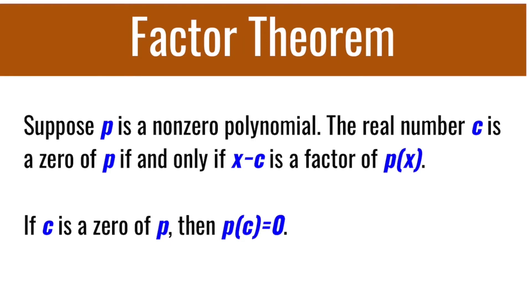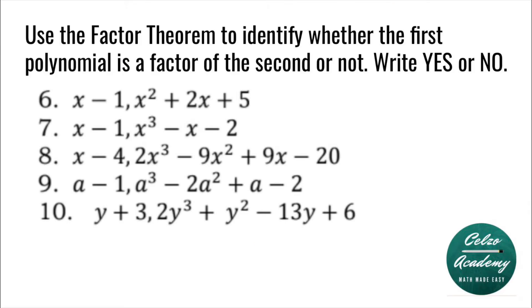Suppose p is a non-zero polynomial. The real number c is a zero of p if and only if x minus c is a factor of p of x. This means that if c is a zero of p, then p of c is equal to zero. Use the factor theorem to identify whether the first polynomial is a factor of the second or not. Write yes or no.